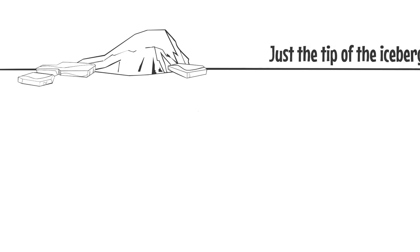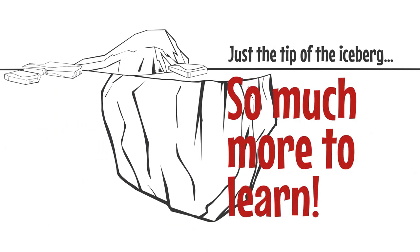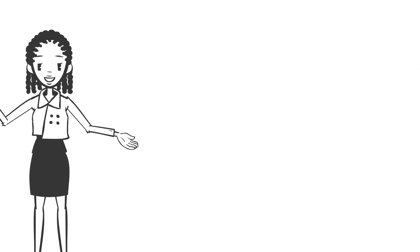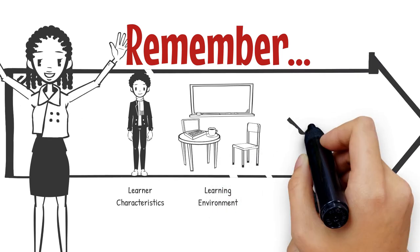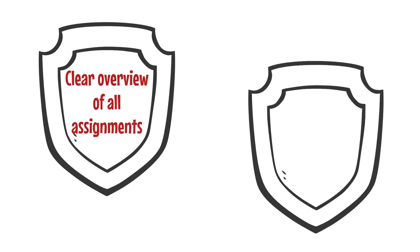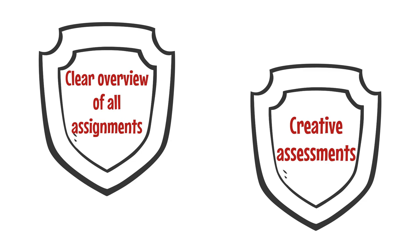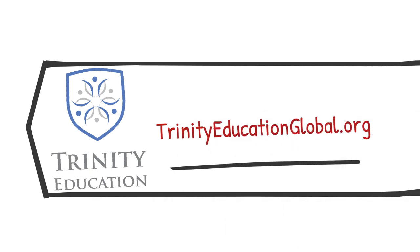There is so much more we could cover about blended learning, but hopefully these tips will get you started with your own blended learning course. Remember to start with your learner characteristics and environment, and only then move to defining your outcomes based on these characteristics. You'll make things most beneficial for your learners by providing a clear overview of all the assignments they'll complete in the blended learning course, as well as coming up with creative assessments that incorporate both face-to-face and online learning modalities. You can learn more about Trinity Education's blended learning model at our website, and I wish you all the best in designing your blended learning course.